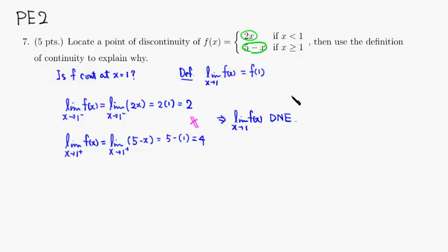Which means that since the limit doesn't even exist, we cannot satisfy this definition of continuity. So this tells you that f is not continuous at x equals 1. Therefore, the discontinuity is at x equals 1.